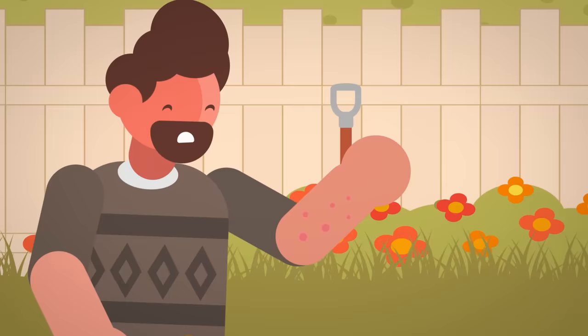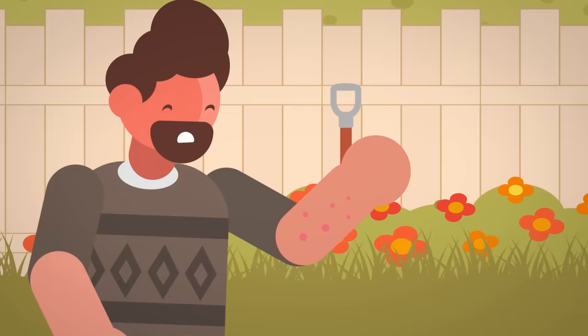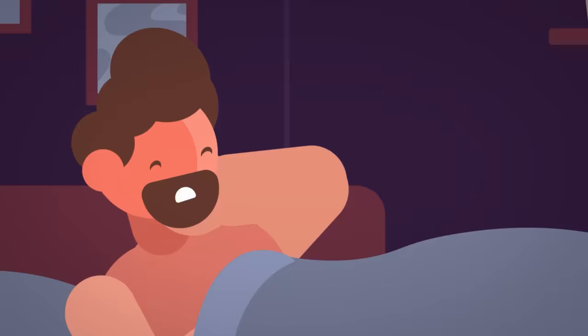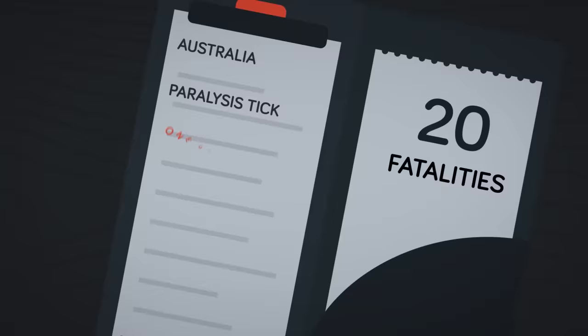Not only can it cause allergic reactions, but it secretes a toxin that can cause neuromuscular function to fail. Within 8 to 12 hours of injection, paralysis can set in and even cause respiratory failure if it's allowed to progress. While these reactions aren't common, with only about 20 fatalities reported in Australia, this tick is one of Australia's most feared animals. And in the land of the bird-eating spiders, that's saying something.